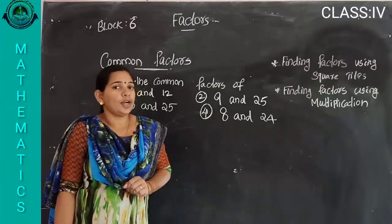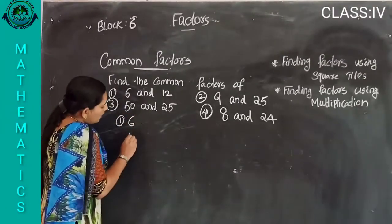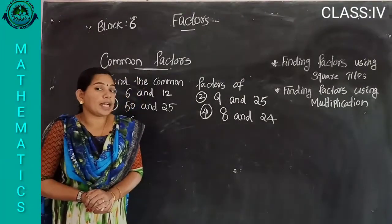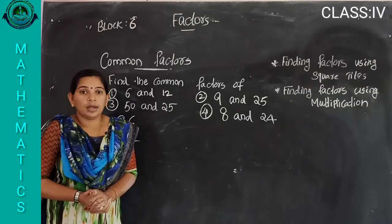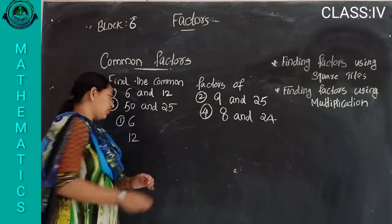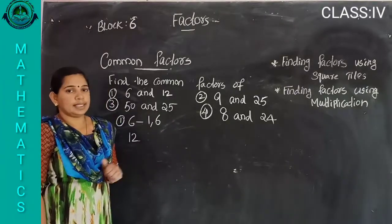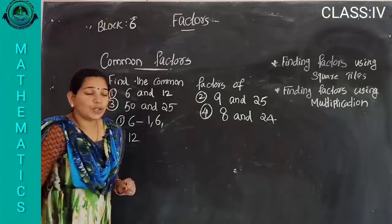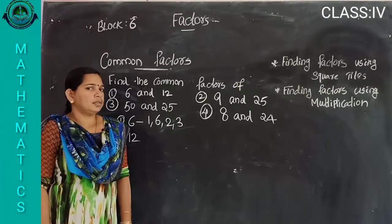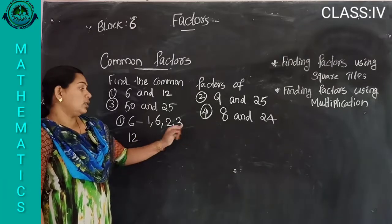Are we ready? First question: six and twelve. To find factors of six using multiplication — which numbers multiplied give six? One into six, six into one, two into three, three into two. All equal six.